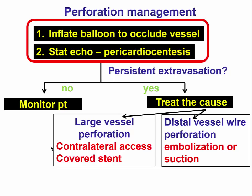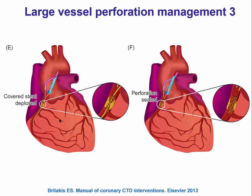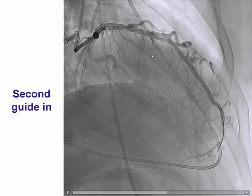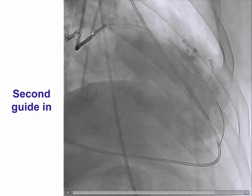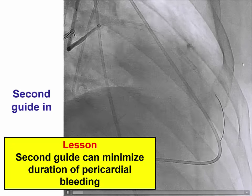For a large vessel perforation, you are going to deliver a covered stent using a second guide catheter via contralateral access—the ping-pong guide technique. The reason is that you don't want to deflate your balloon and have continued pericardial bleeding while delivering the covered stent. So a second guide is inserted, a second wire is advanced through the area of perforation, a covered stent is inserted over the second wire, and then the first wire is withdrawn and the covered stent is deployed at the perforation site, hopefully successfully sealing it.